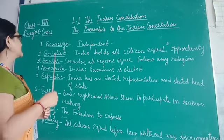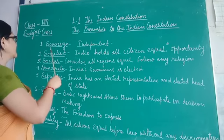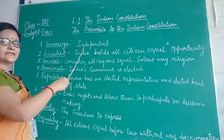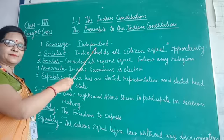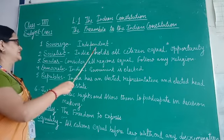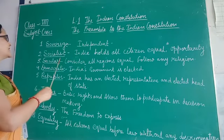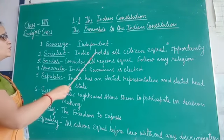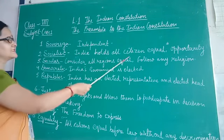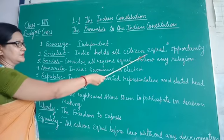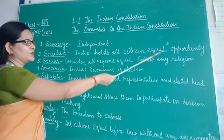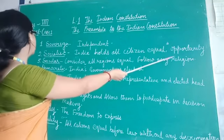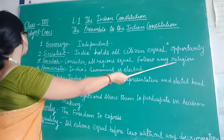So here let me discuss these words. Sovereign means that India is an independent country. Socialist means that India holds all the citizens equal and offers equal opportunities to all citizens.